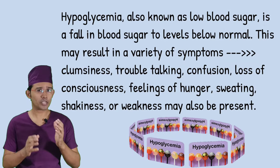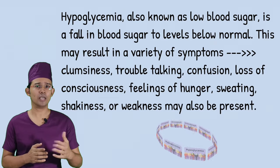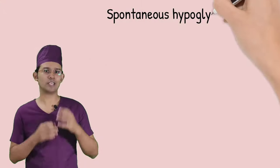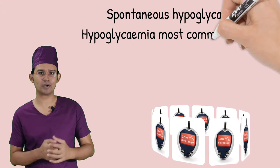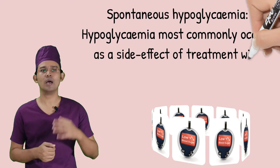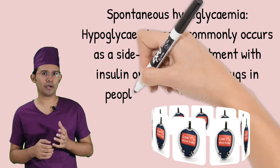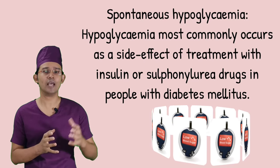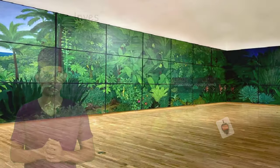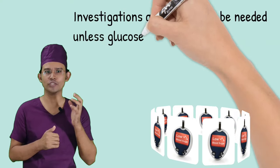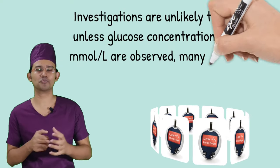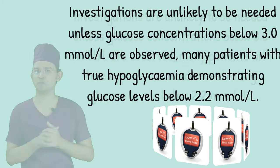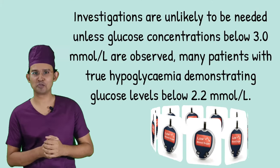These symptoms may present as hypoglycemia. Spontaneous hypoglycemia most commonly occurs as a side effect of treatment with insulin or sulfonylureas, which are drugs used for diabetic patients. Investigations are unlikely to be needed unless the glucose concentration falls below 3 mmol/L, though many patients demonstrate glucose levels below 2.2 mmol/L.